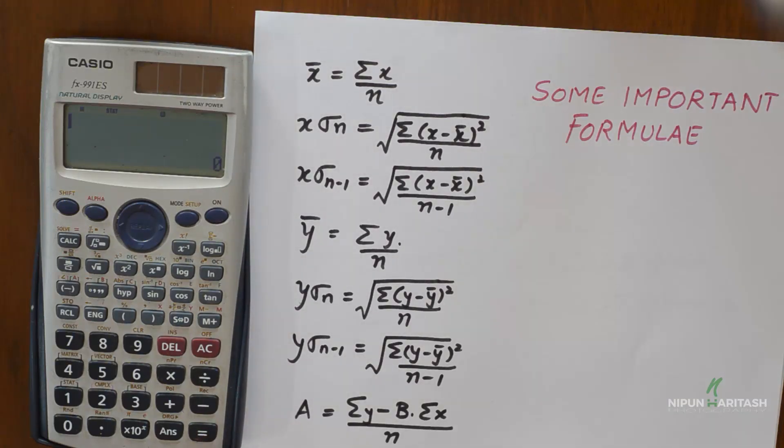Now this is going to be different from standard deviation calculations because there we need to use the frequency of the first variable, and then here we have two variables x and y so we will need to turn the frequency off. So I will tell you step by step how you can do it.